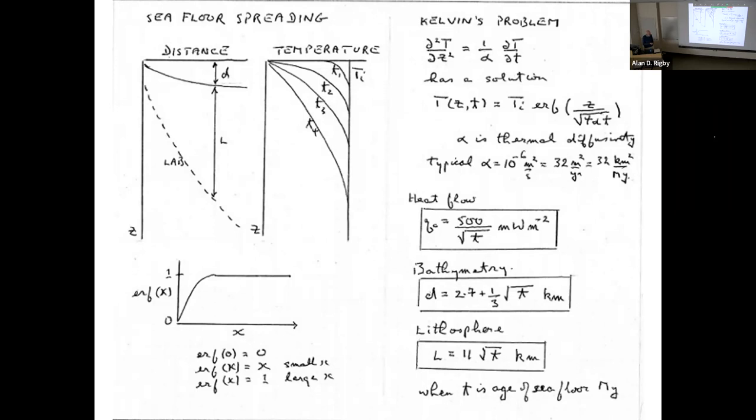The lithosphere is even easier: 11 square root of age. At 1 million years, it's 11 kilometers, a little more than oceanic crust thickness. At 100 million years, it's 110 kilometers. I've often maintained thermal geophysicists should make a flag with these three equations and parade around saying this is our gift to the world: heat flow, bathymetry, and lithospheric thickness on the back of an envelope.